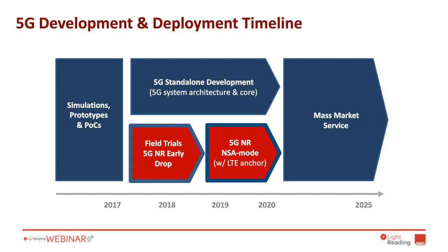Full 5G with a new system architecture called 5GS — with a 5G core — is also scheduled for Release 15, due to freeze in June 2018, with specifications released three months later in September. That is more complex, but it's really important for things like end-to-end network slicing and more advanced applications. When we start talking about standalone full 5G, we're again talking 2020 onwards.